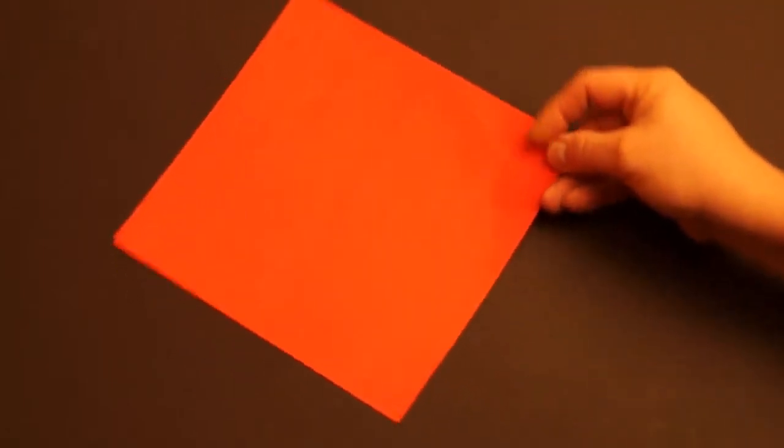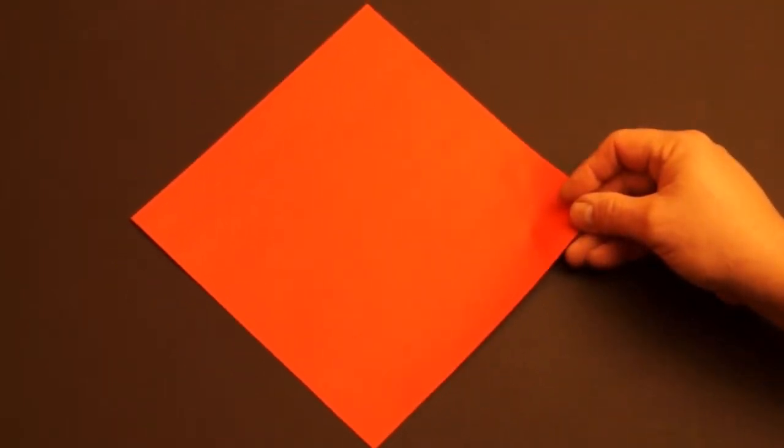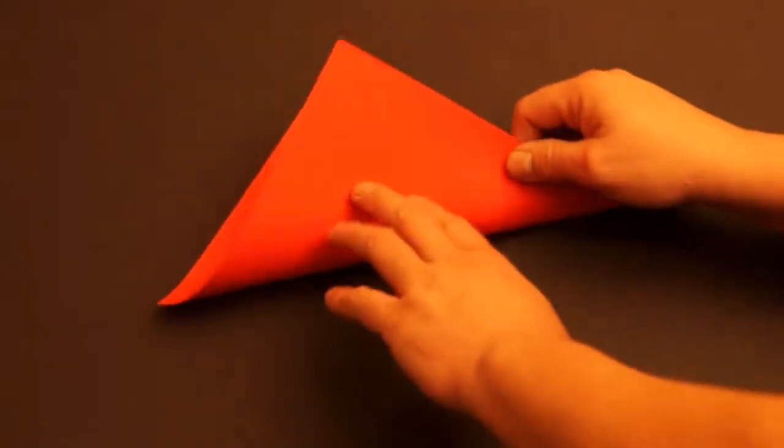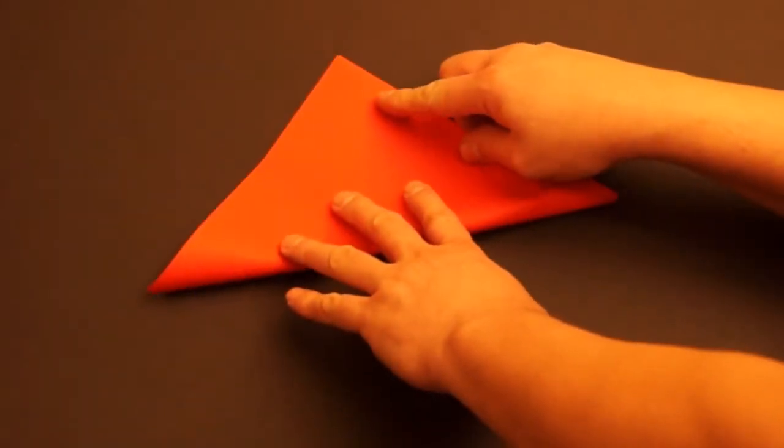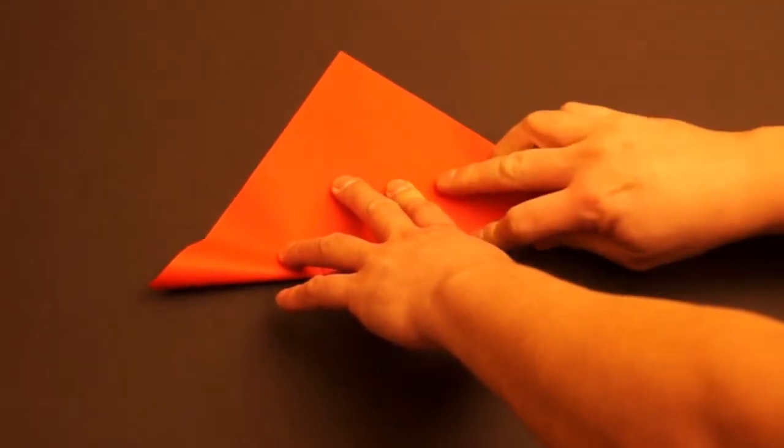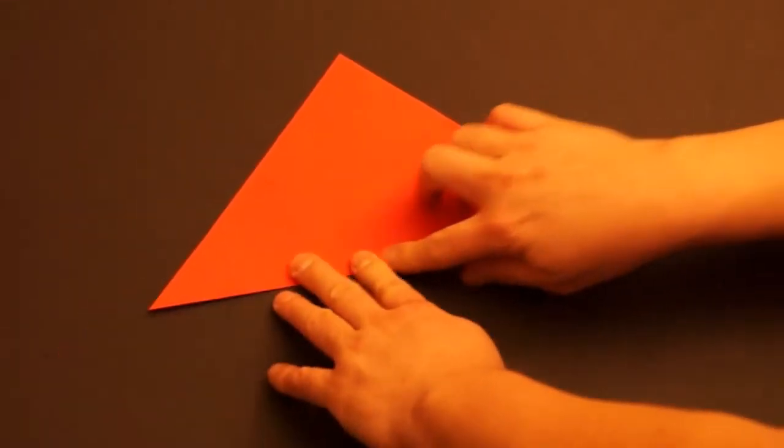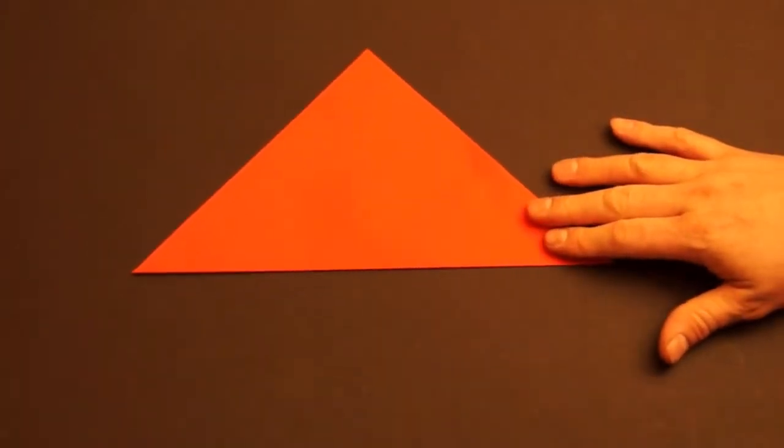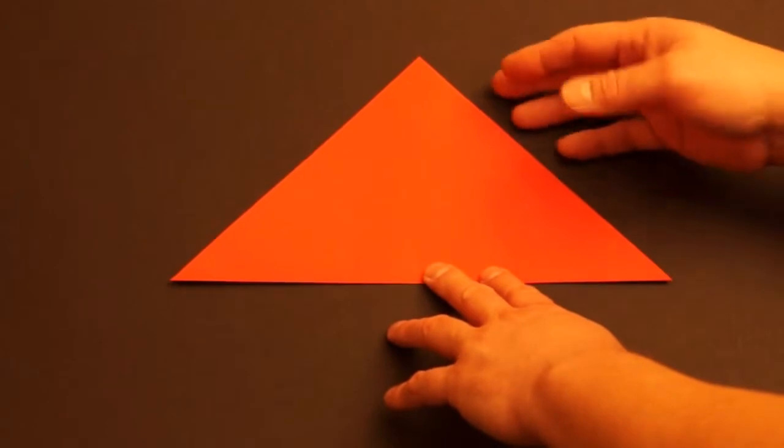First we start with a square. Turn your paper so that it's like a diamond. Fold the bottom to the top. Line up the edges as best you can. Open it up.